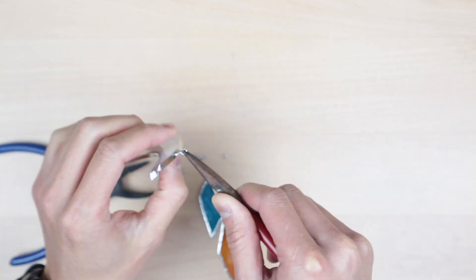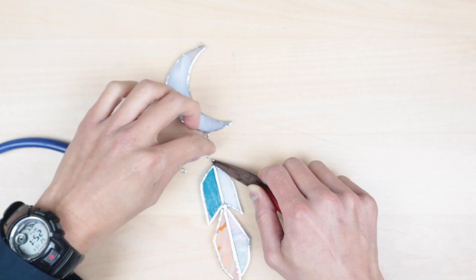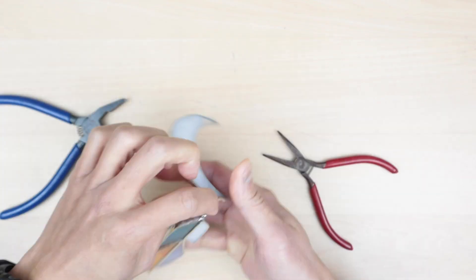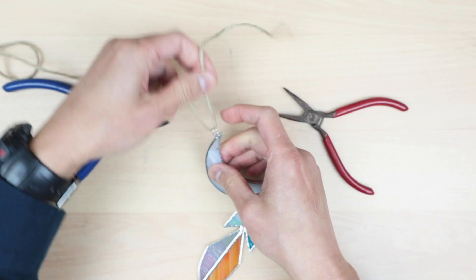To finish up all we have to do is add a chain to connect the moon and feather and a twine or a piece of rope to hang it.